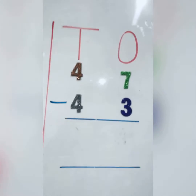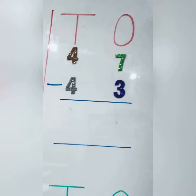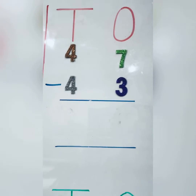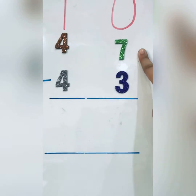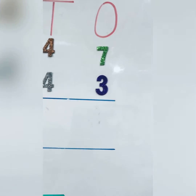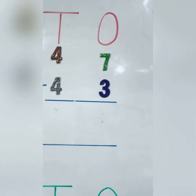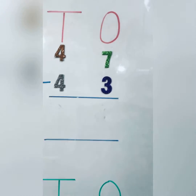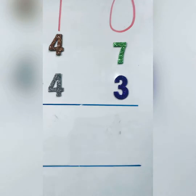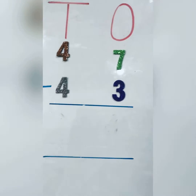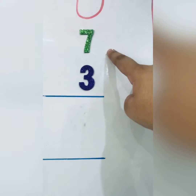Question number one. We have two columns: the tens column and the ones column. I will start from the ones column. So over here I have seven and three. Now how will I subtract it? You can see that you have three. Three is the smaller number. So I will start counting ahead from my smaller number and I will count till my bigger number. That way I will know what is the difference between these two numbers.